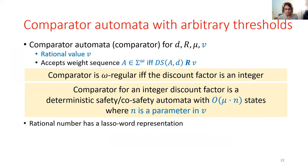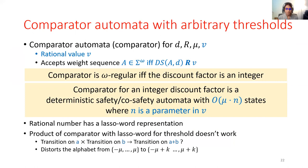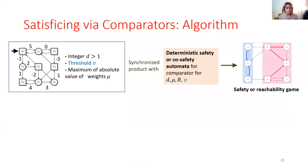So perhaps we could do some kind of automata manipulation to be able to construct this comparator. But simple techniques will not work, which is why we actually have to white box the comparator constructions, and incorporate this lasso word representation right from the start to be able to get compact representations of the comparator.